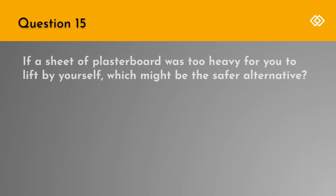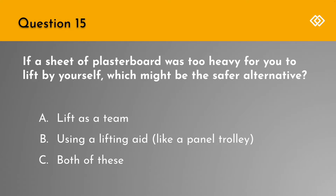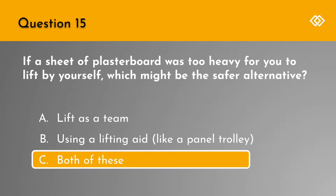Question 15. If a sheet of plasterboard was too heavy for you to lift by yourself, which might be the safer alternative? A. Lift as a team. B. Using a lifting aid like a panel trolley. Or C. Both of these. The correct answer is C. Both of these.